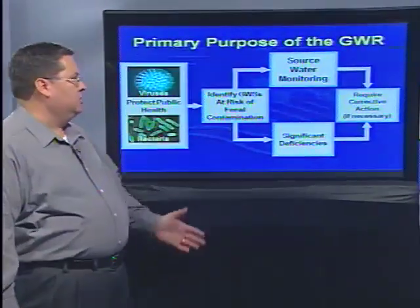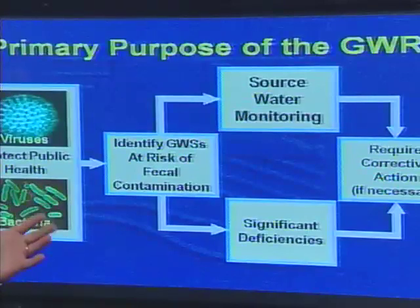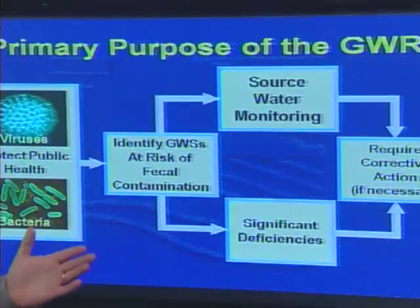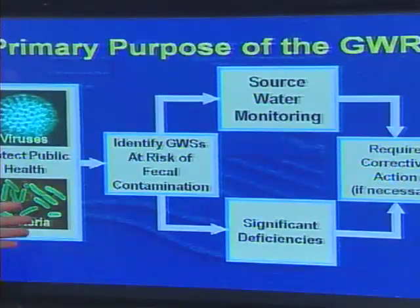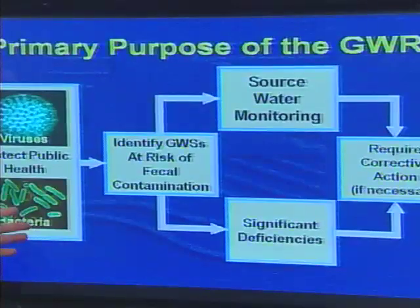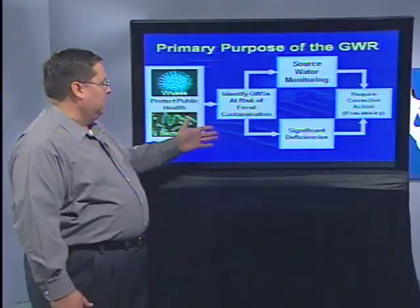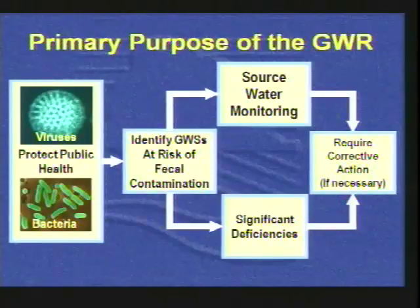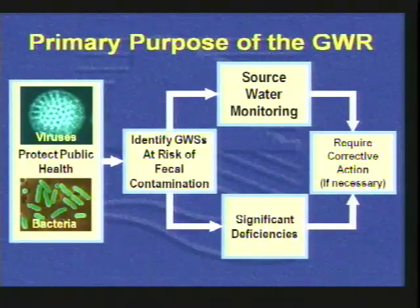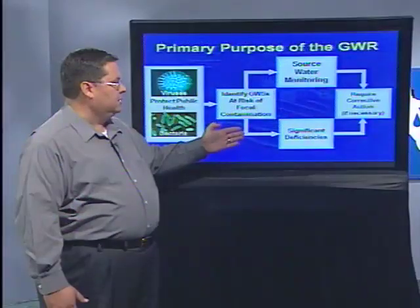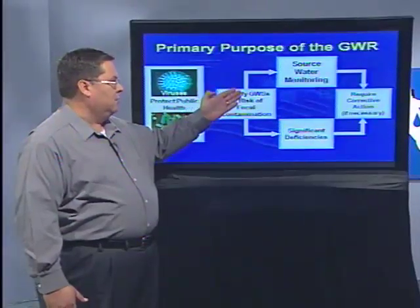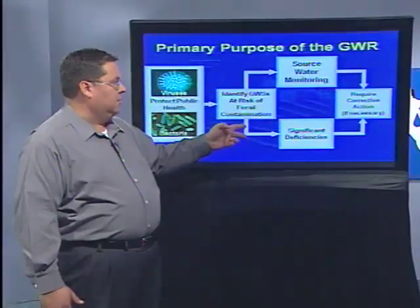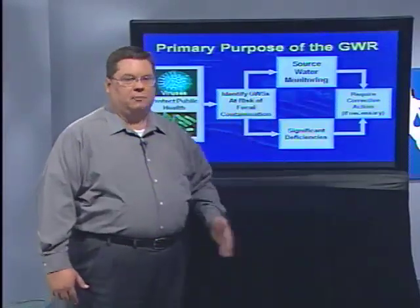Here we have an illustration of the overall purpose of the Groundwater Rule. It does provide increased protection against microbial pathogens. Some of the processes involved are that we identify groundwater sources that are at risk of fecal contamination through sanitary surveys. Those sanitary surveys could discover significant deficiencies. Along with that we have source water monitoring, and if things are discovered then we would require corrective action.